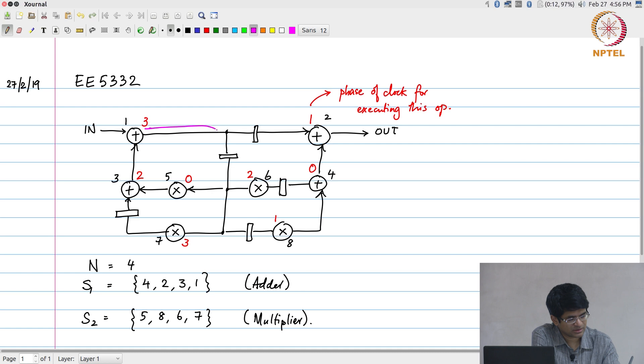For example, this line that I have drawn in magenta over here corresponds to one edge in the data flow graph. This is the edge from node 1 to node 6 with the number of delay elements on it is equal to 1. This w is the number of sample delays.